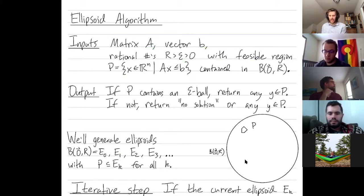As the entries of the matrix A and vector B get bigger and bigger, capital R is getting bigger and bigger, and epsilon is getting smaller and smaller.